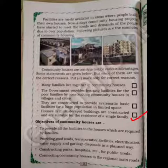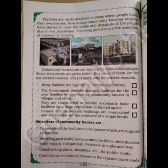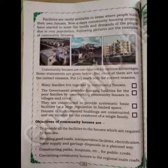Now we are going to learn about the objectives of community houses, which are to provide all the facilities required by families. Community houses provide many facilities, including good roads, transportation facilities, electrification, water supply, and garbage disposal in a planned way.